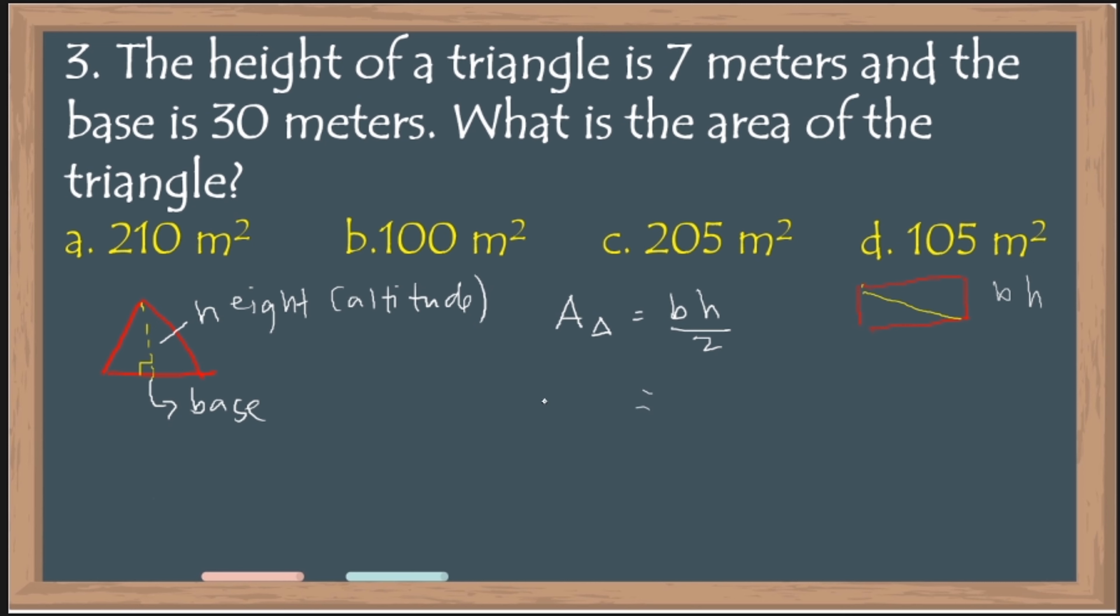Kasi kalahati ng rectangle ay triangle. So, para mas madali mong maintindihan yung area ng triangle. Pag rectangle, base times height. Pag triangle, base times height divided by 2. So, substitute now our base. We have 30 times our height or altitude. That's 7. Then, divide it by 2. What is 30 times 7? That is 210. Divided by 2. Iyan ay 105. Remember, area toh. So, the unit is square meters. Therefore, our answer is letter D.